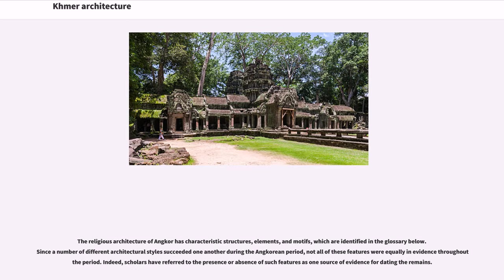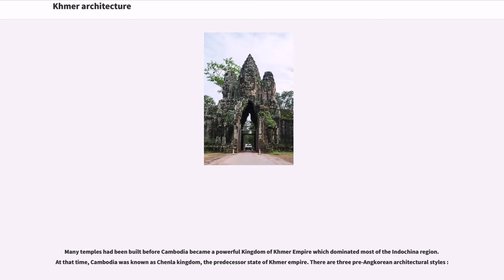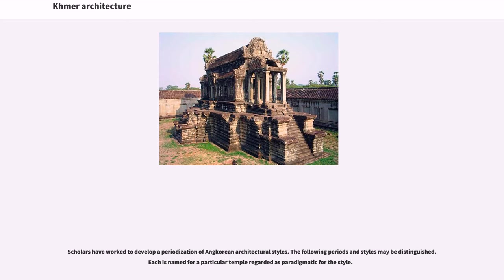The religious architecture of Angkor has characteristic structures, elements, and motifs identified in a glossary. Since a number of different architectural styles succeeded one another during the Angkorian period, not all features were equally in evidence throughout. Scholars have referred to the presence or absence of such features as evidence for dating the remains. Many temples had been built before Cambodia became a powerful Khmer Empire, which dominated most of the Indochina region. At that time, Cambodia was known as the Chenla Kingdom, the predecessor state of the Khmer Empire. There are three pre-Angkorian architectural styles, and scholars have worked to develop a periodization of Angkorian architectural styles, each named for a particular temple regarded as paradigmatic.